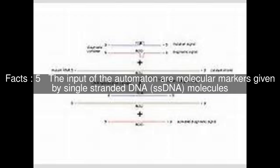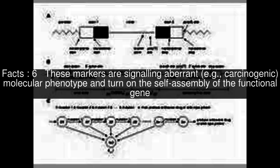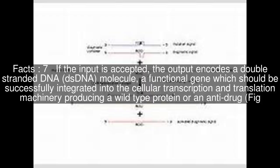The input of the automaton are molecular markers given by single-stranded DNA (SS-DNA) molecules. These markers signal aberrant (e.g., carcinogenic) molecular phenotype and turn on the self-assembly of the functional gene. If the input is accepted,